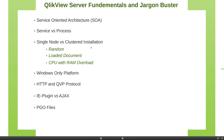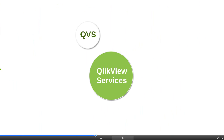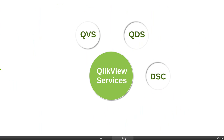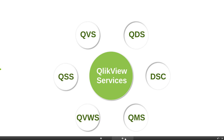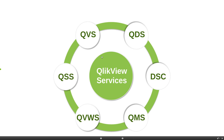Welcome back to section 6, lesson 2. Let's continue and look at ClickView services. The primary one is the ClickView service (QVS), then you have QDS which is ClickView Distribution Service, DSC which is the Directory Service Connector, QMS which is ClickView Management Service, QVWS which is ClickView Web Server, and finally QSS which is ClickView Settings Service. All these services communicate via web service calls.